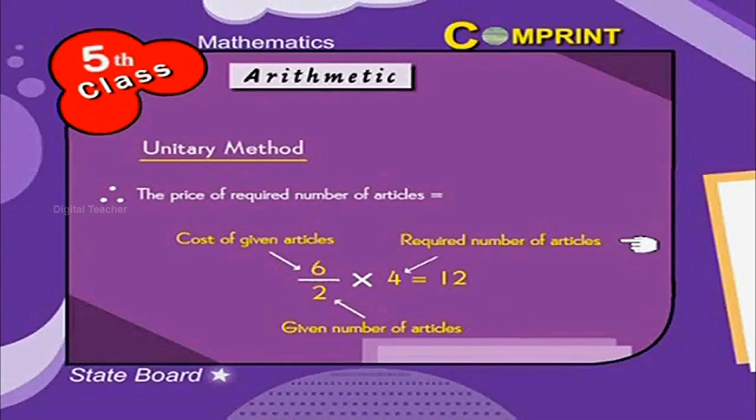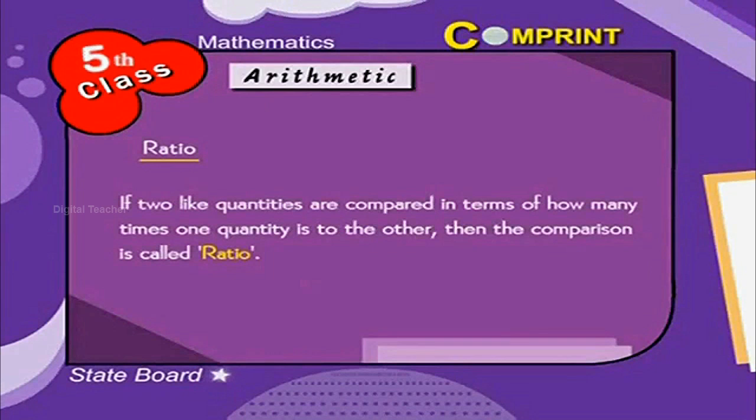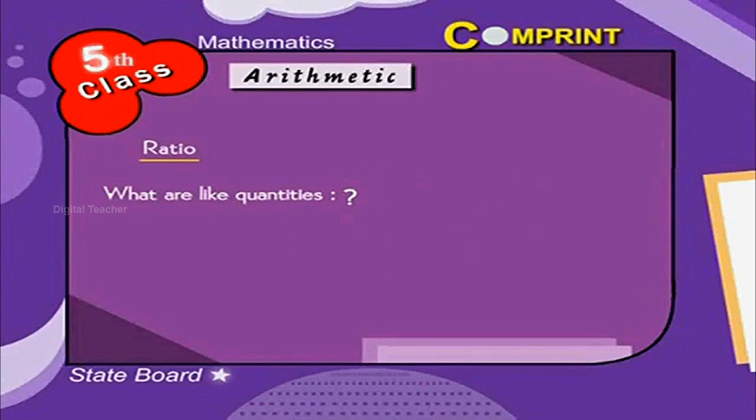Ratio: If two like quantities are compared in terms of how many times one quantity is to the other, then the comparison is called ratio. The ratio between two quantities is denoted by is to. Like quantities are quantities which are of same kind.